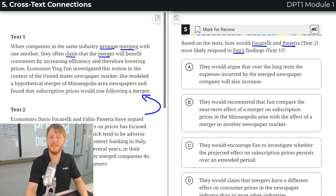Text one is saying when companies in the same industry propose merging, so coming together with each other, they often say that the merger is going to benefit consumers, so that would be a good thing, by making the company more efficient, work better and work more quickly, more effectively, and therefore lowering prices.